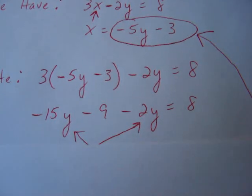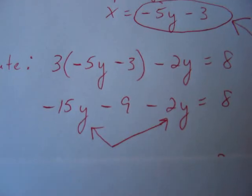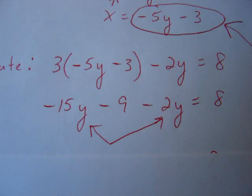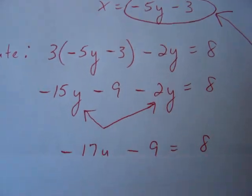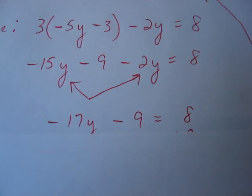Moving right along, we're doing pretty well here, trying to solve for y. We need to collect like terms. I can see that we have a negative 15y and a negative 2y. Those combine to a negative 17y. Recopy your minus 9 equals 8.